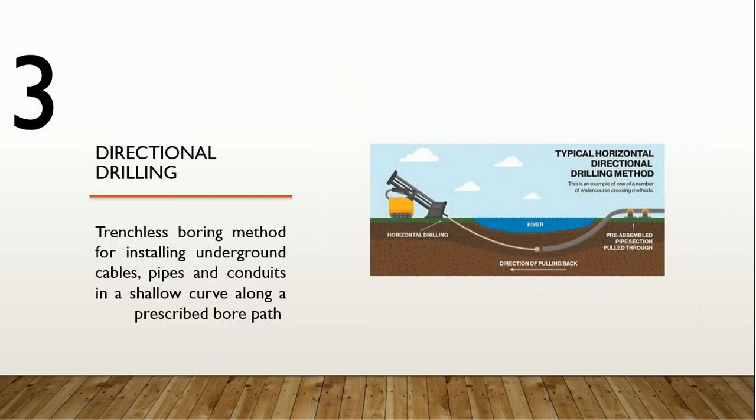The third type is directional drilling, a trenchless boring method for installing underground cable or pipes in a shallow curve along a prescribed bore path. There will be a sending bit and receiving bit. The machine will dig from sending to receiving and pull the cable to the other side.